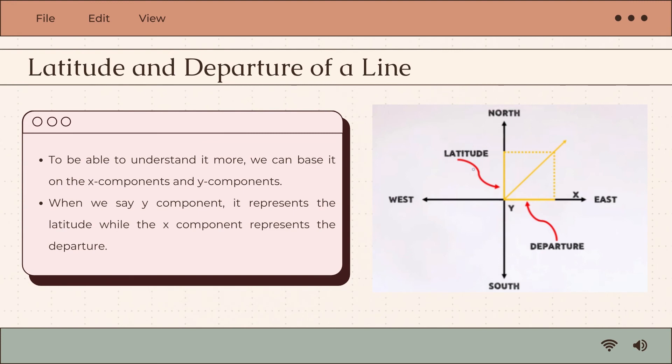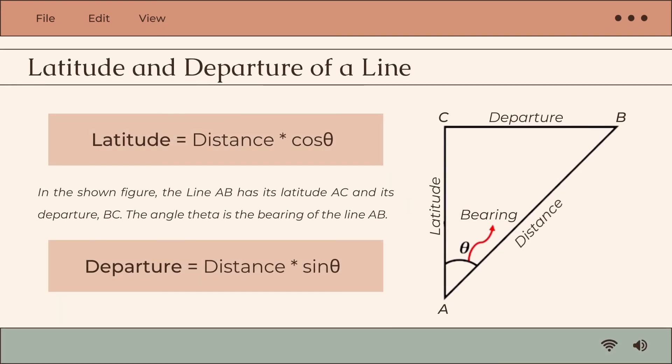When we say the y component, it represents the latitude, while the x component represents the departure. In the figure shown, line AB has its latitude AC and its departure, line BC. The angle theta in this figure is the bearing of line AB.